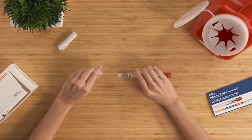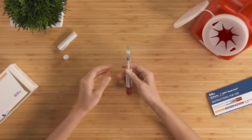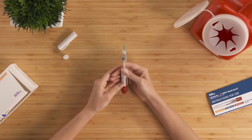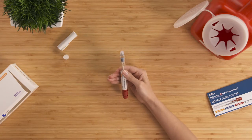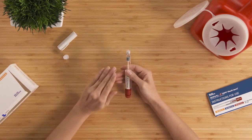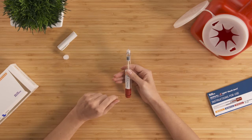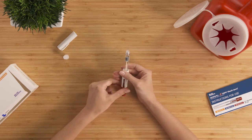Pull off the outer needle cap and save it for removing the needle after the injection. Keeping the needle pointing up, carefully pull off the green inner needle shield and throw it away. Lastly, a warning. Do not recap the needle with the green inner needle shield. You could stick yourself with the needle.